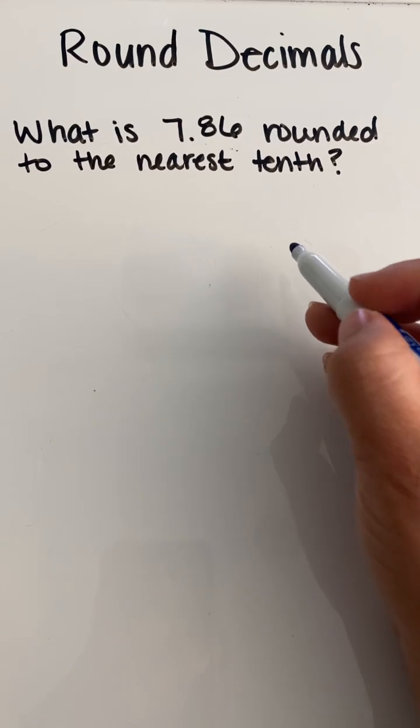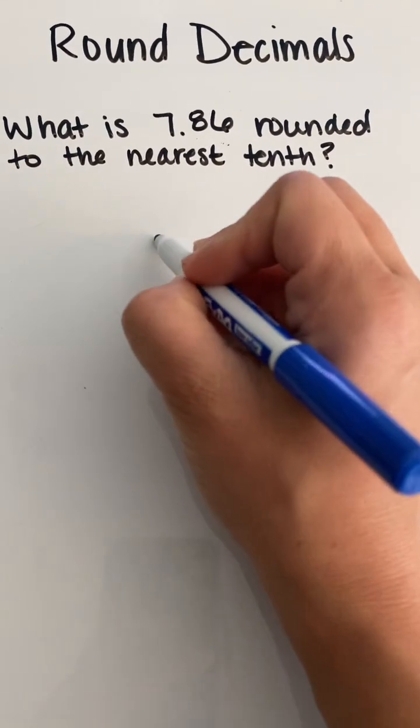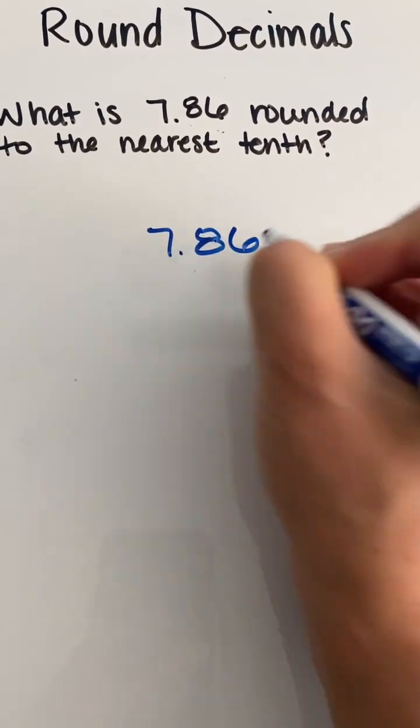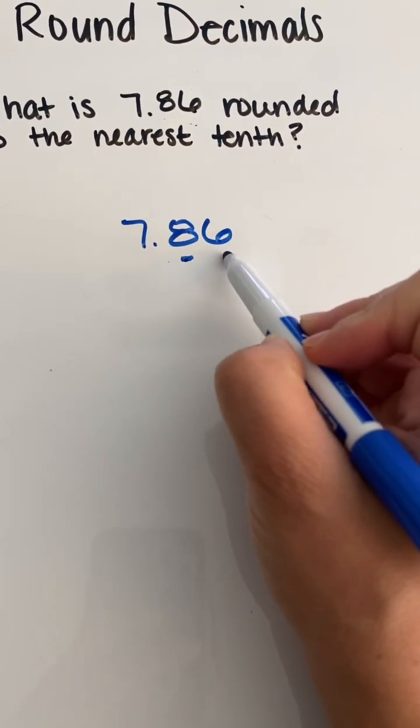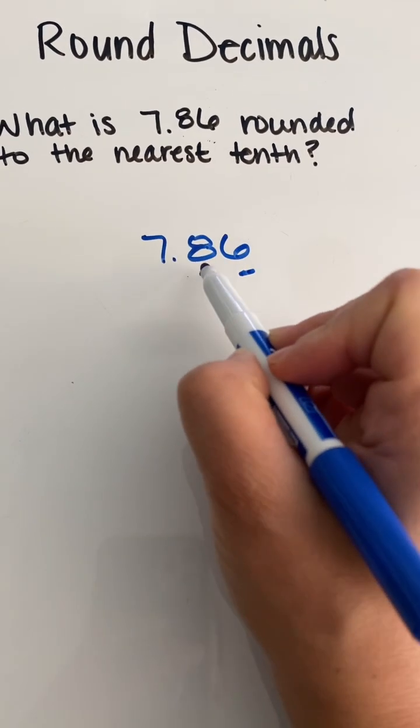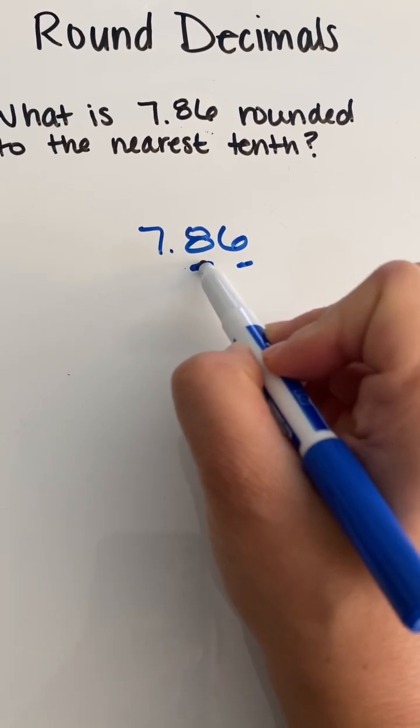What is 7.86 rounded to the nearest tenth? We know that in 7.86, eight is in our tenth place and six is in our hundredths place. So we want to round to the nearest tenth which is going to be our eight place.